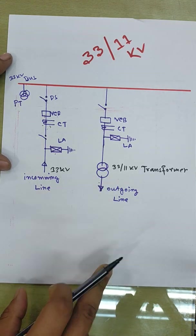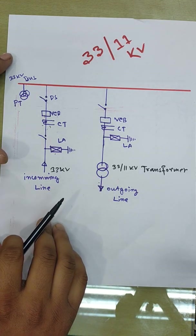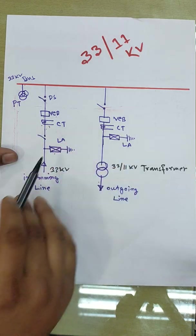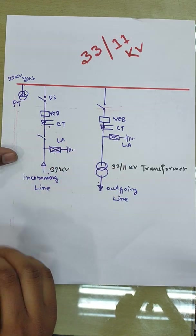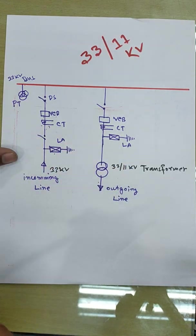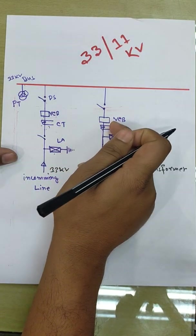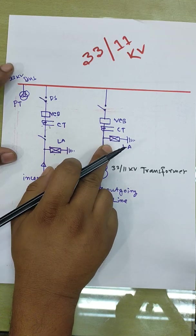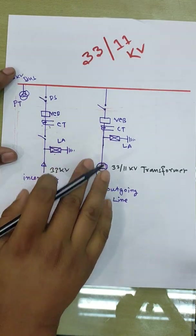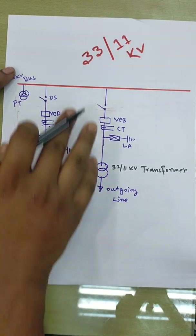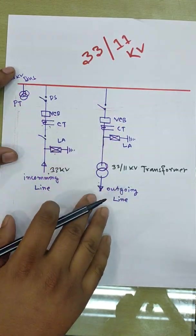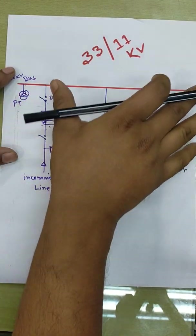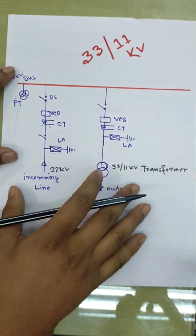Now we can see that the second circuit breaker is used on the 33kV side, and the second circuit breaker has CT, and the lightning arrestor can also be used in the power circuit.